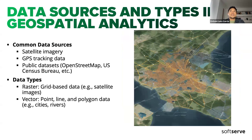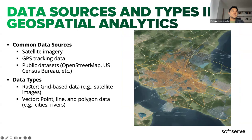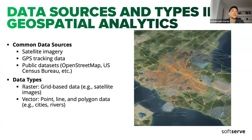Regarding data sources and types we commonly use: we have satellite imagery, which depends on the information available — this is a raster data type. We also have vectors, which are representative of point, line, and polygon data that we can work with in different formats. Sometimes it's a GeoJSON, sometimes a CSV, sometimes an app we can pull information from.